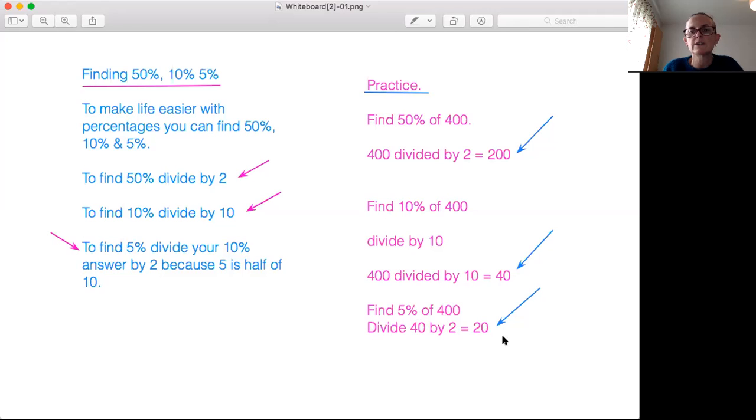So if we look on the right here on our practice question, find 5% of 400. Well we know that 10% of 400 is 40. So we divide 40 by 2 which is 20.